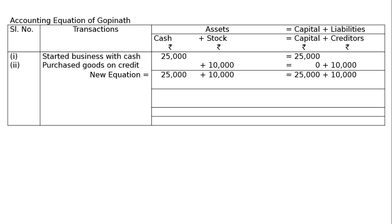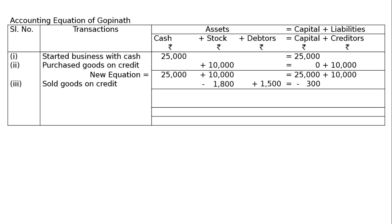Third transaction — sold goods to Shohan on credit, costing rupees 1,800 for rupees 1,500. Since the name is given, it is a credit sale. Stock goes out, so minus rupees 1,800 from stock, and add rupees 1,500 to debtors. You are selling rupees 1,800 worth of stock at rupees 1,500, hence rupees 300 is the loss, which will be deducted from capital.